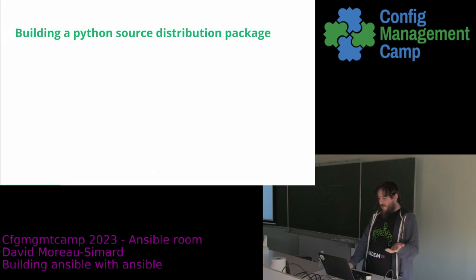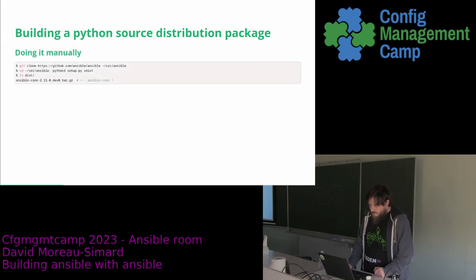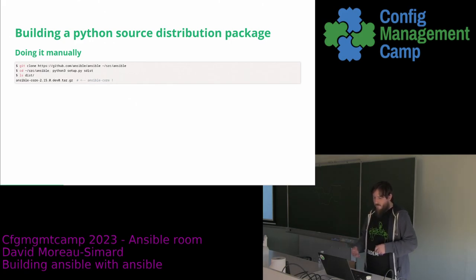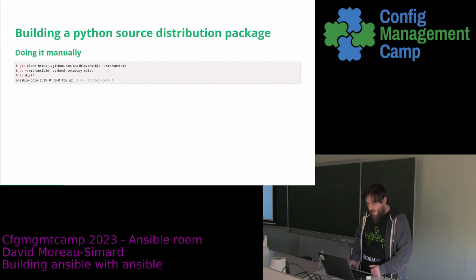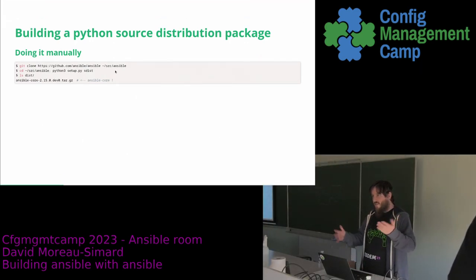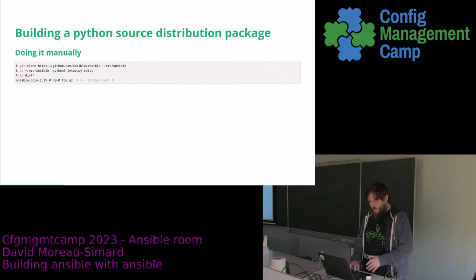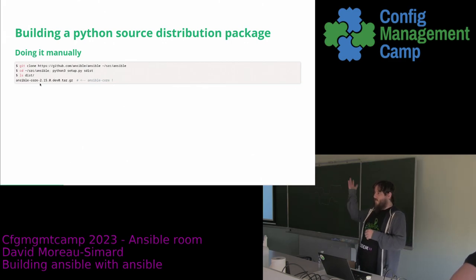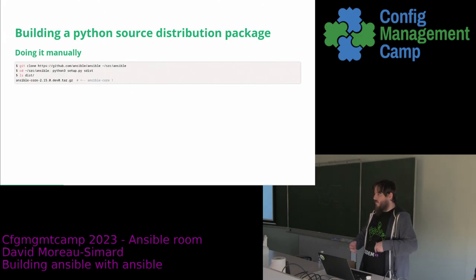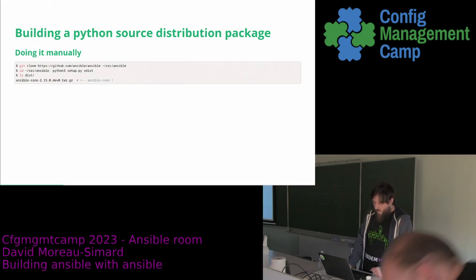What does building a Python source distribution package look like if I do it by hand? I need to clone a Git repo — this is the ansible/ansible Git repo. I go inside the directory, then I use the Python setup.py file to build the source package and there I have it. I could install this, I could eventually upload it to PyPI, and so on. It can be more complicated depending on the Python package — some have binary dependencies — but this is at a high level how it works.